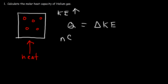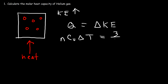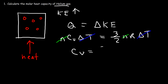Q equals NcV·ΔT, where cV is the molar heat capacity at constant volume. The change in kinetic energy is (3/2)NRΔt. We can cancel ΔT and N from both sides, so for a monoatomic gas like helium, the molar heat capacity is (3/2)R.